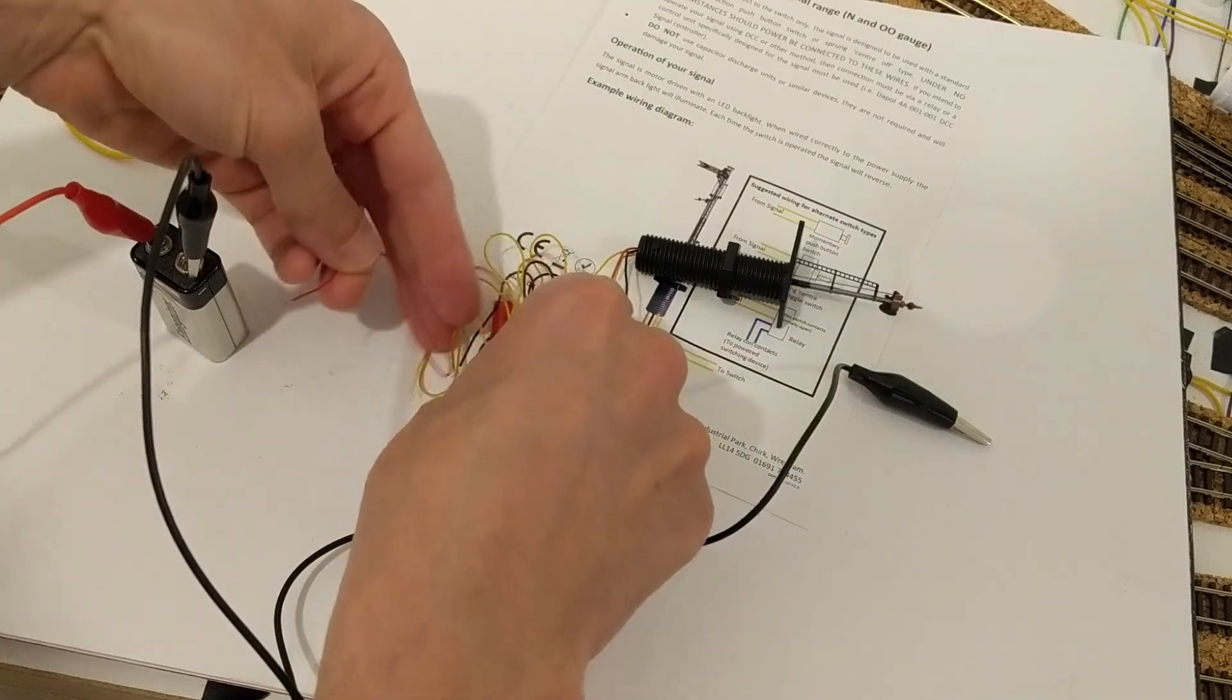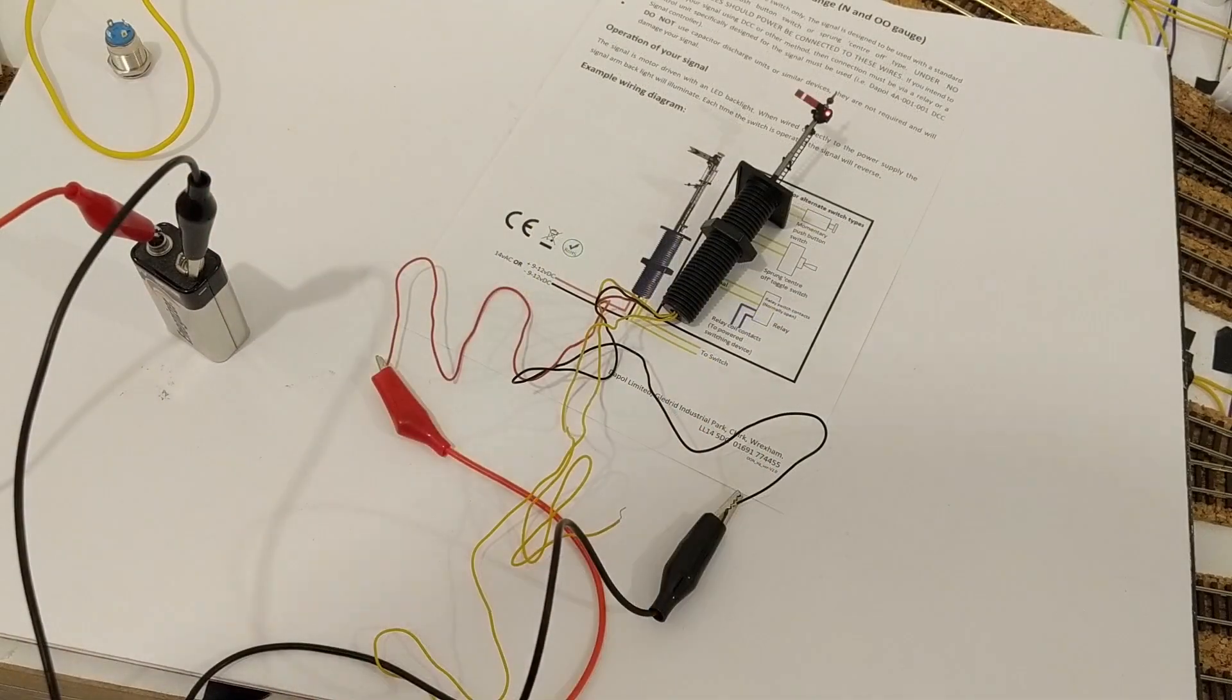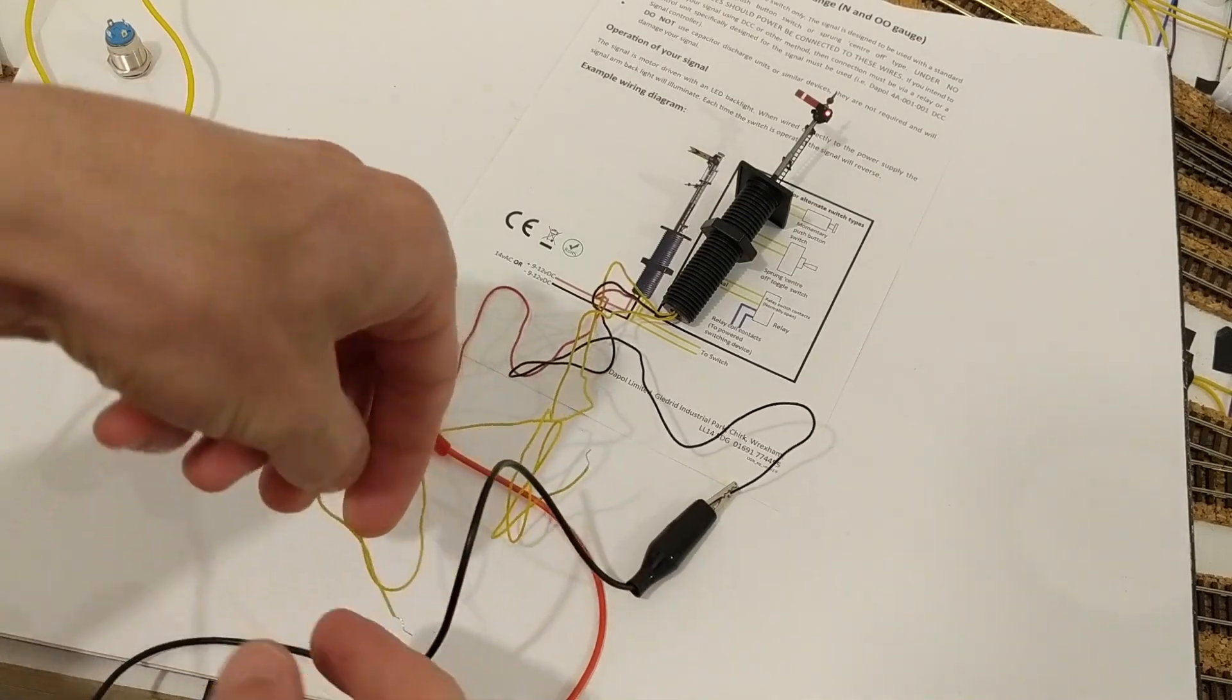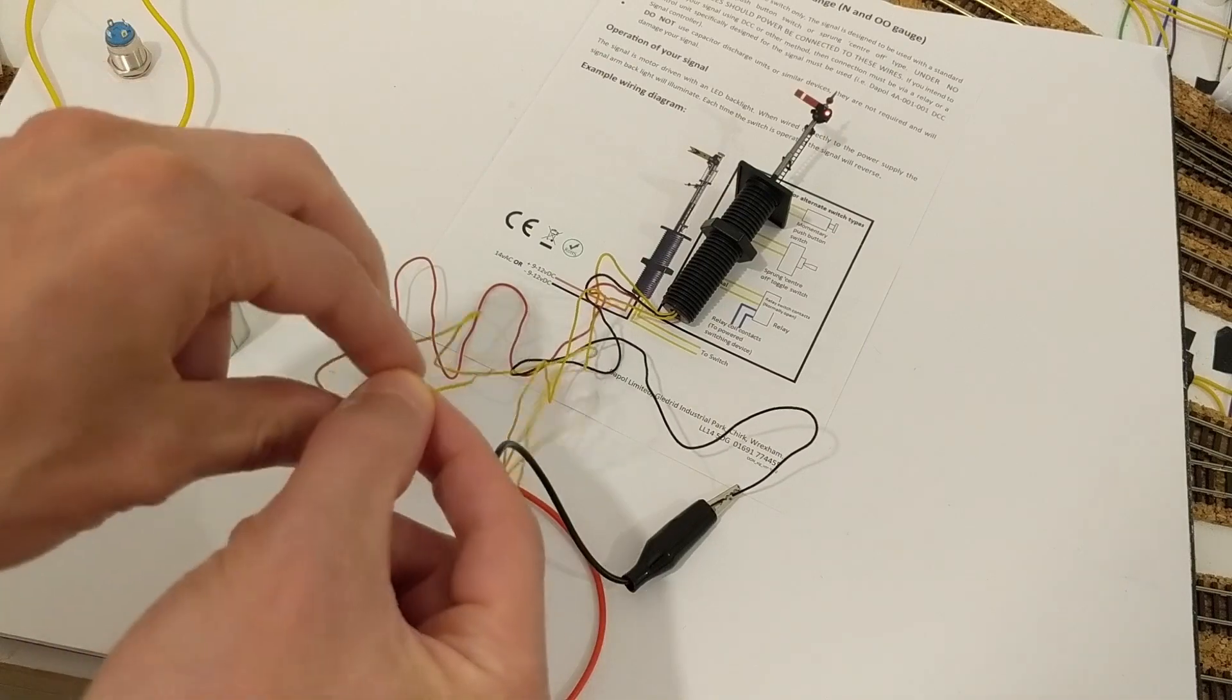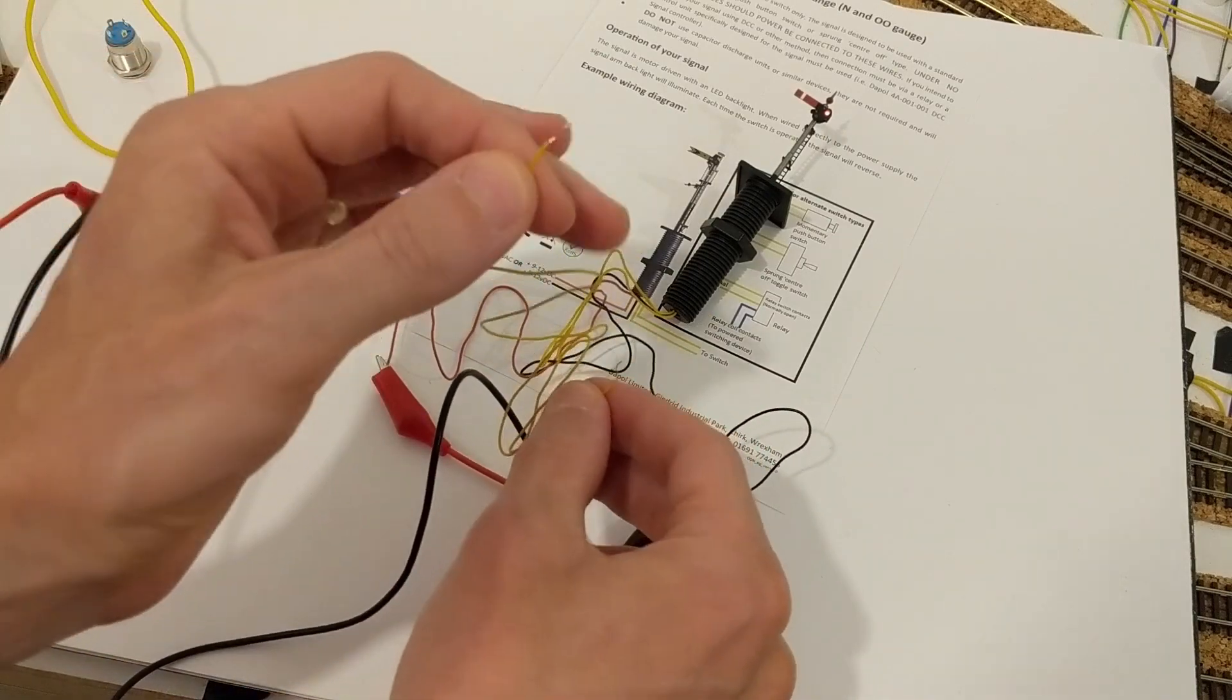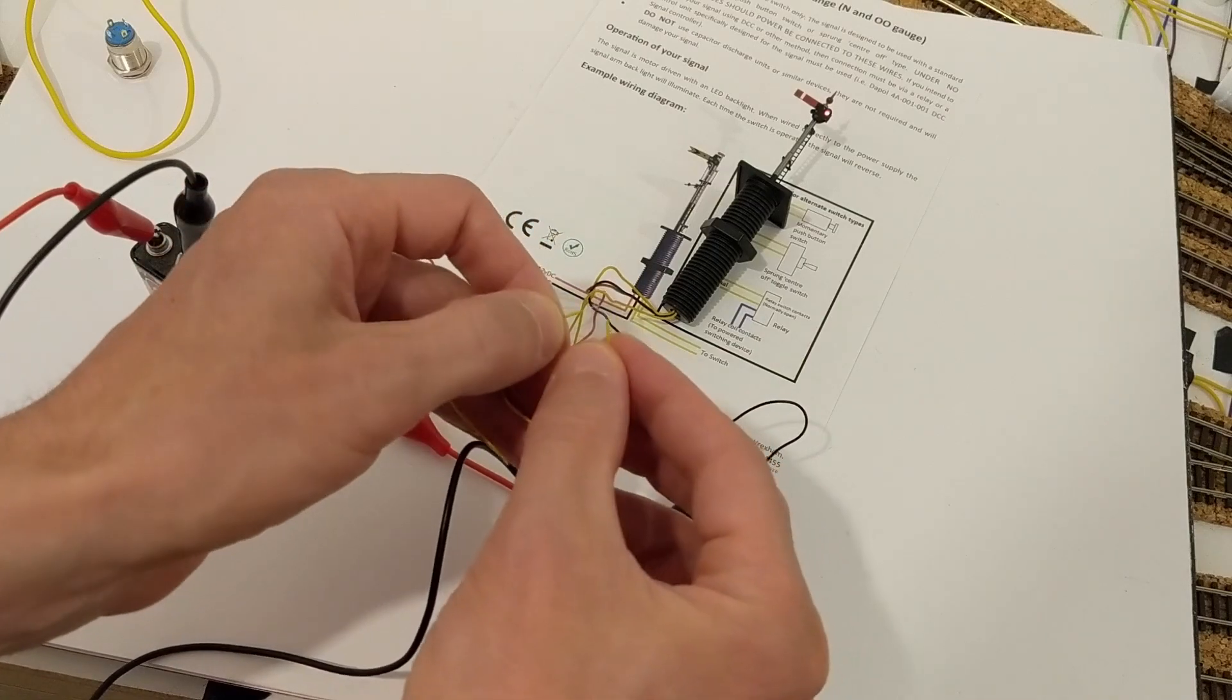The instructions talk about using momentary switches to operate the signal, and are very clear that power must not be connected to the yellow wires. It doesn't explicitly say so, it's implied from the use of a momentary contact switch, but the signal's movement is triggered by the two yellow cables being connected to each other briefly. This was easy to test without a switch.